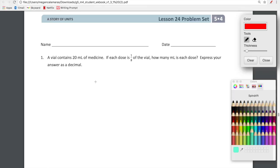Here we go! So the first problem: A vial contains 20 milliliters of medicine. If each dose is one-eighth of the vial, how many milliliters is each dose? Express your answer as a decimal.